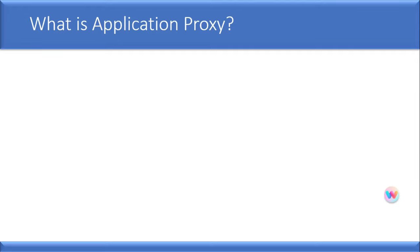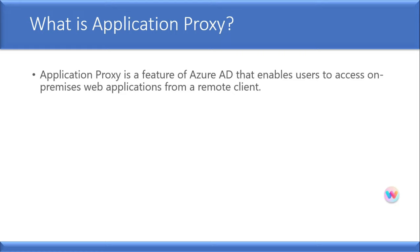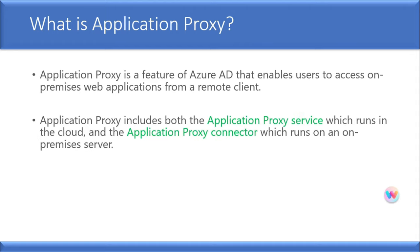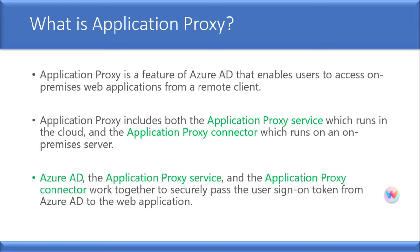What is Azure Application Proxy? Application Proxy is a feature of Azure Active Directory that enables users to access on-premise web applications from a remote client. Application Proxy includes both the Application Proxy service, which runs in the cloud, and the Application Proxy connector, which runs on an on-premise server. Azure AD, the Application Proxy service, and the Application Proxy connector all work together to securely pass the user sign-on token from Azure AD to the web application.